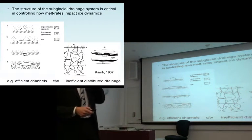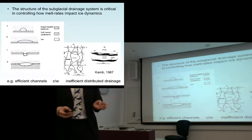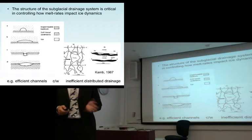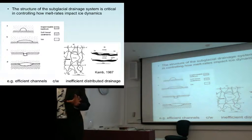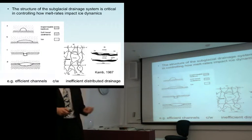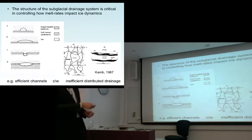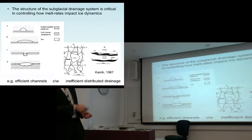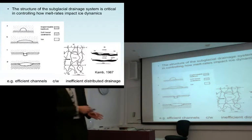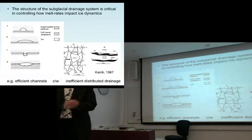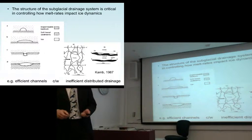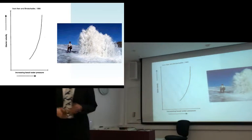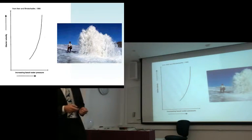The subglacial drainage system is critical in terms of controlling these processes because of the way melt rates impact ice dynamics. This is a diagram from my thesis from 1993 showing examples of efficient drainage systems, and this is an example of an inefficient or distributed system that PIN has talked about. The key thing about these different systems is that they control the basal water pressure.